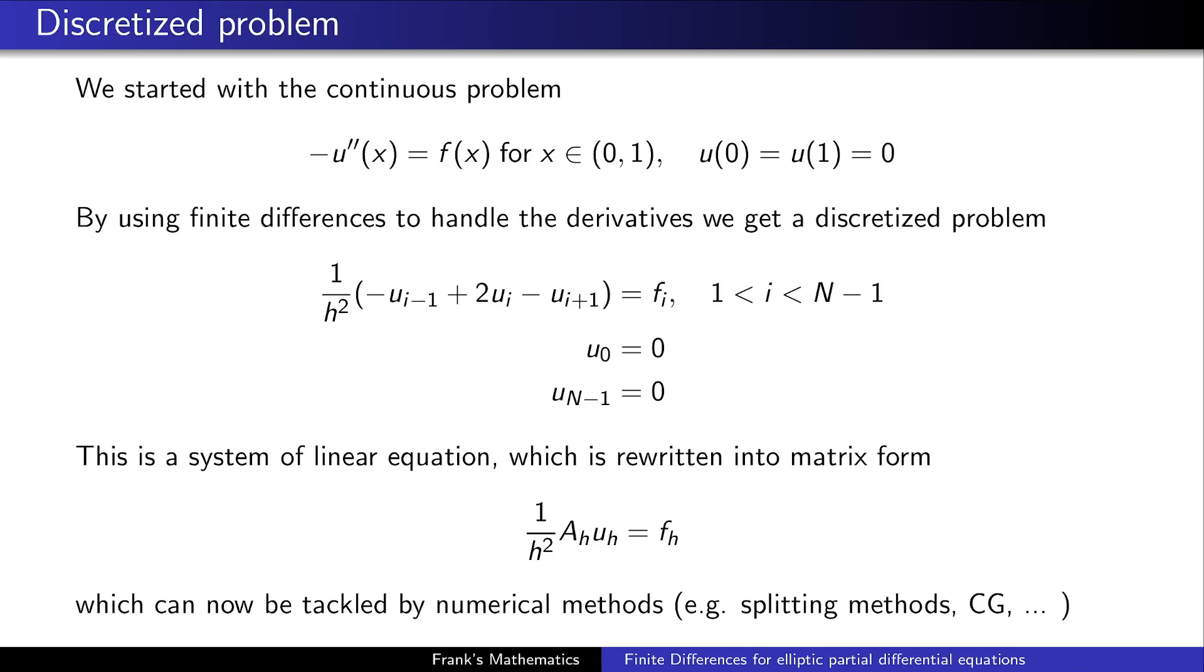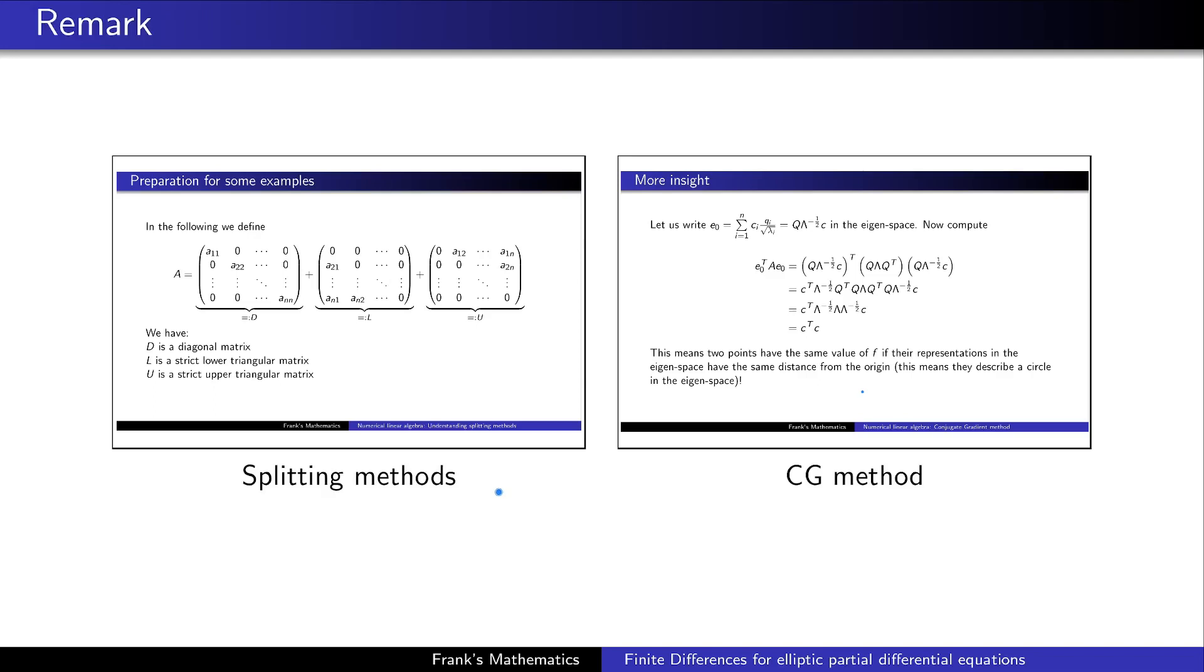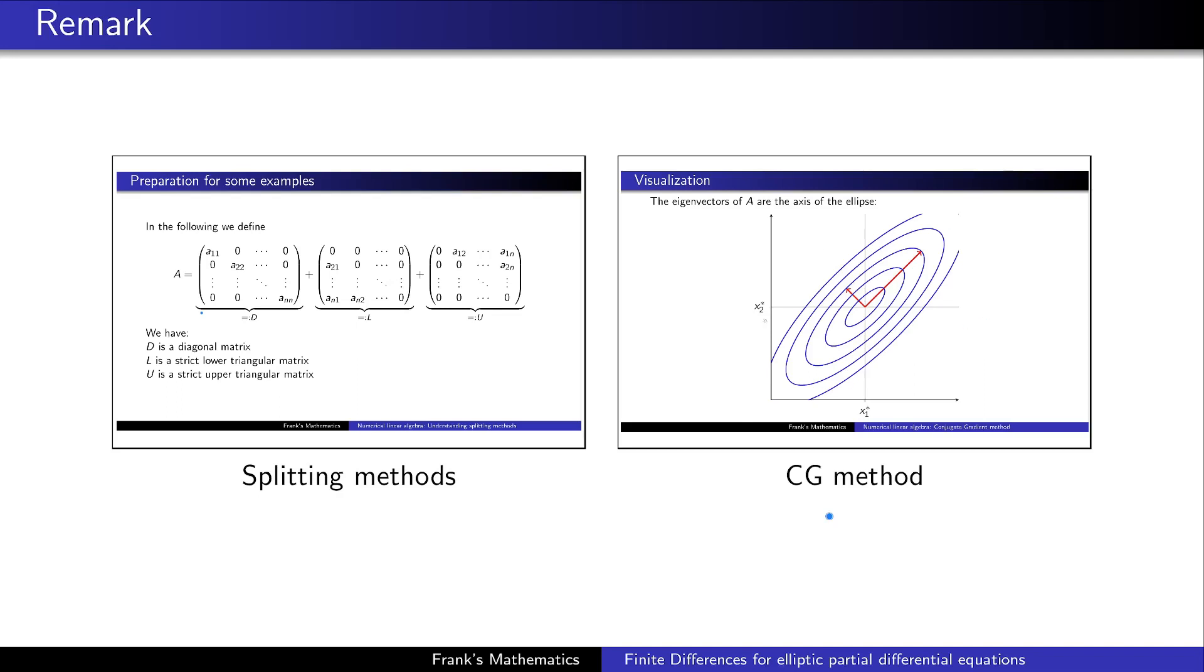Let's do a small recap. Everything we've done so far is on one slide in a very condensed form. We started with the continuous Poisson equation. By using finite differences we approximated derivatives and got a discretized problem. However, to tackle this by standard numerical methods, for instance by splitting methods or by conjugate gradient methods, we rewrite this into a matrix vector multiplication. If you do not know how to solve such systems you might look into my video about splitting methods or the conjugate gradient method, also the preconditioned conjugate gradient method. There I explain in detail how to solve such systems. The links are in the video description.